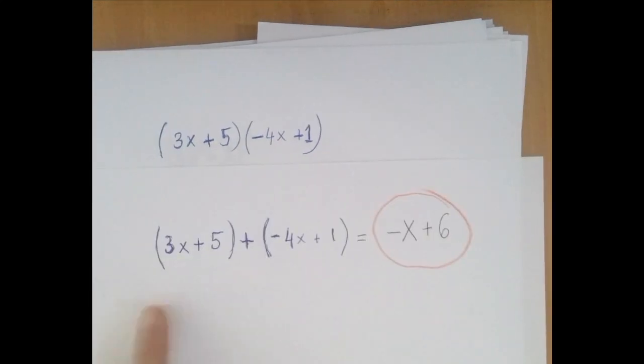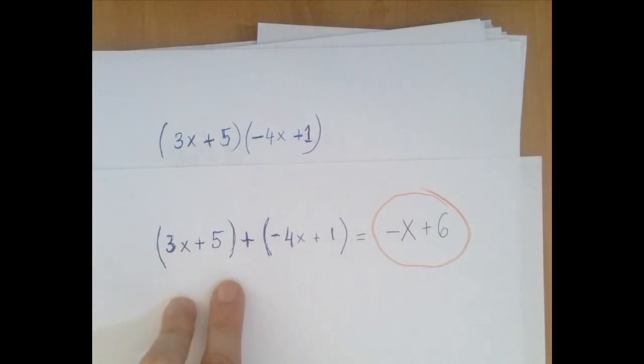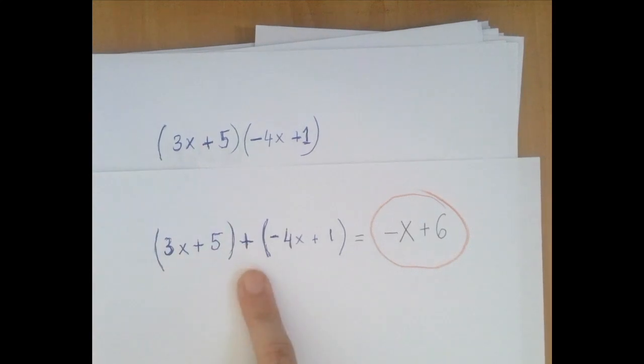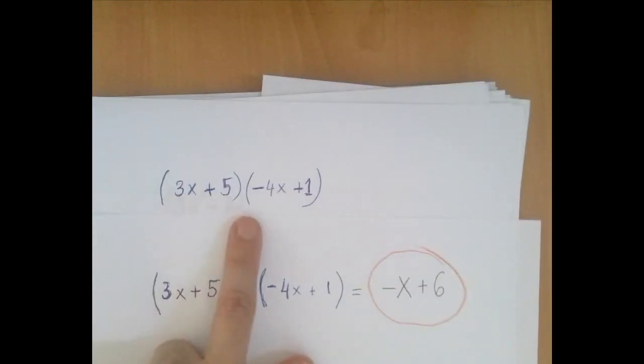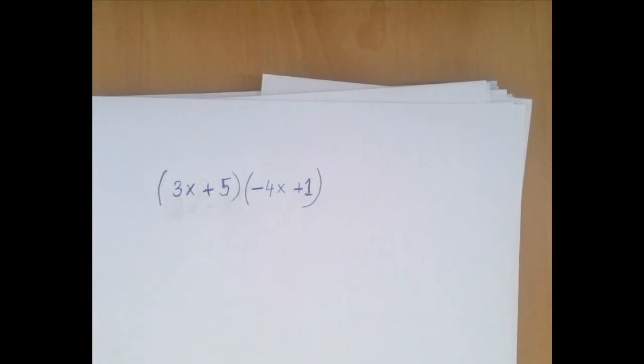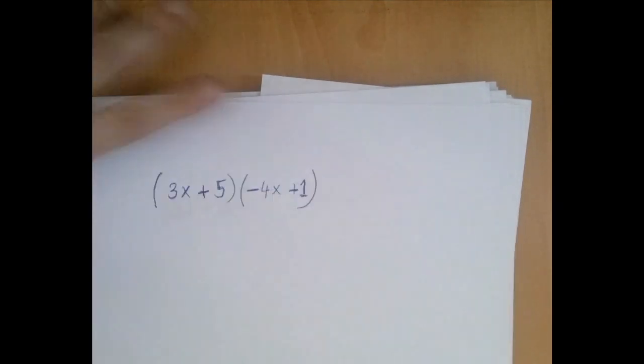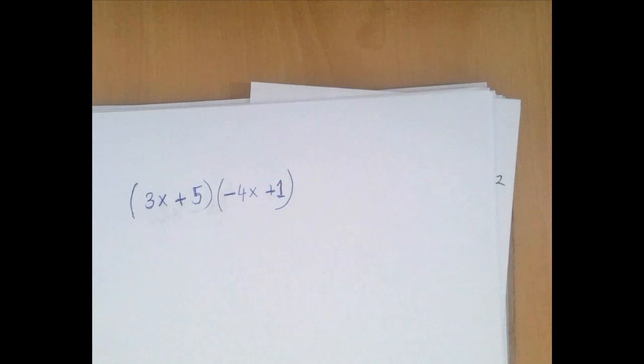So this was a previous example. Both expressions are in parentheses, but in between the parentheses there is addition. Here, between the two parentheses, there is nothing and that nothing indicates the default operation, namely multiplication. So we're going to multiply these two expressions, carefully applying the distributive law.